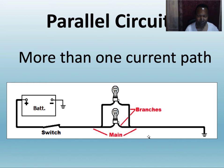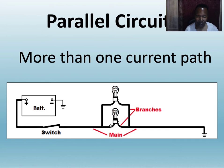Each is an individual circuit. If this one is six ohms and this one is three ohms, each will pull a certain amount of amps. One circuit will not affect the other — it all depends on the resistance in that circuit.